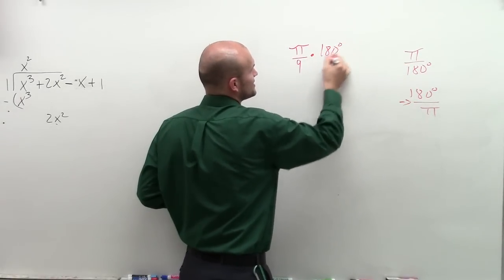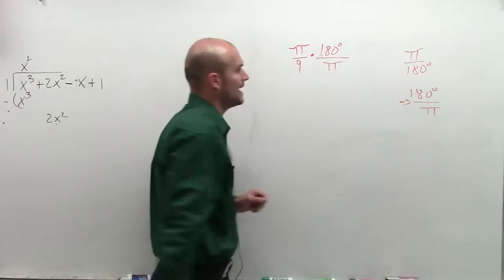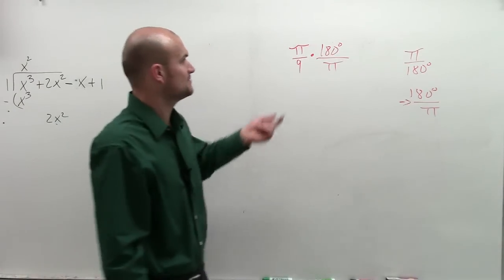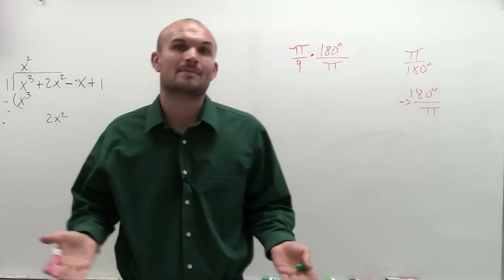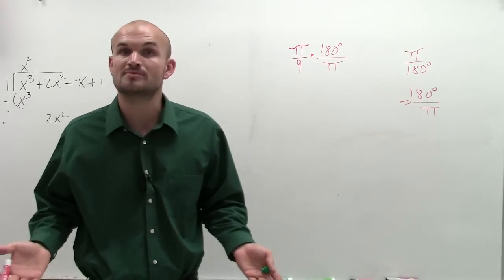because I have 180 degrees up top divided by π. And the reason I want to choose this one is because when I have π divided by π, that gives me 1. Therefore, now my angle is no longer in terms of π.